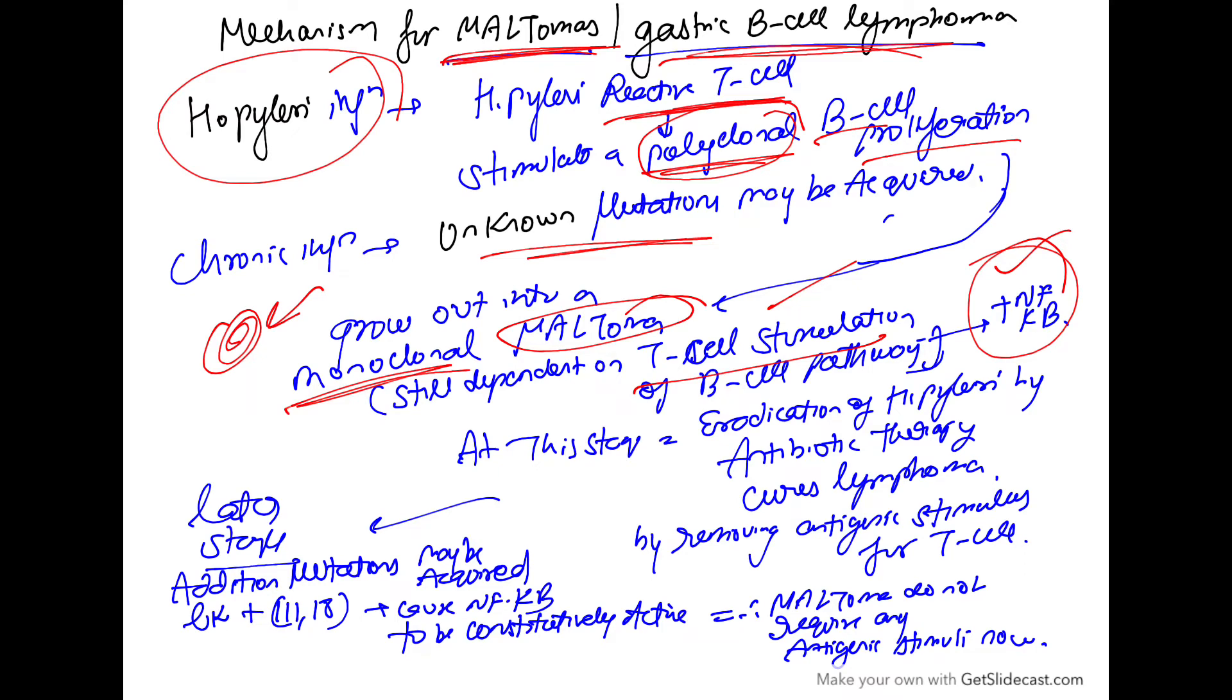So at this stage, we can eradicate the H. pylori by giving antibiotic therapy and with this antibiotic, we can cure a cancer, cure lymphoma. How? By removing the antigenic stimulus, by removing H. pylori,